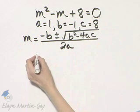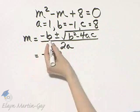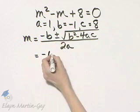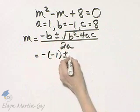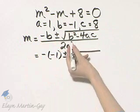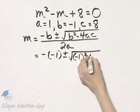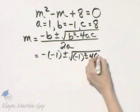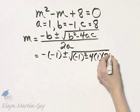Now, let's put in our replacement values. It's the opposite of b, and b itself is negative 1, so be very careful there, plus or minus the square root of b squared. That's negative 1 squared minus 4 times a is 1 times c is 8.